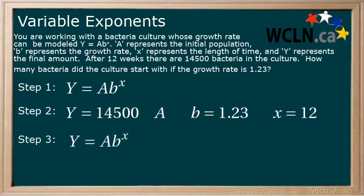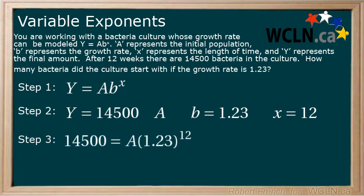Step 3: Replace the variables in the equation with any known values. Now we can replace the variables in the equation by the values we know. So now we have 14,500 equals a times 1.23 to the power of 12.